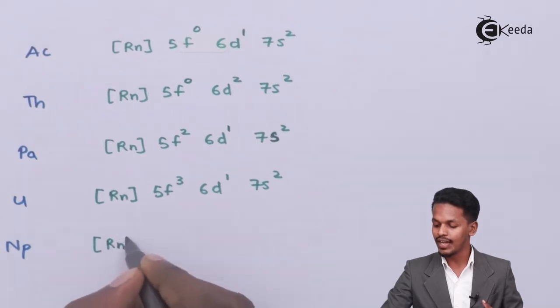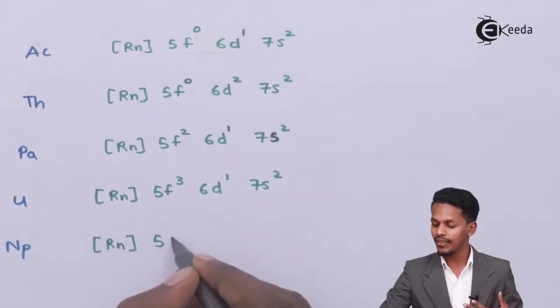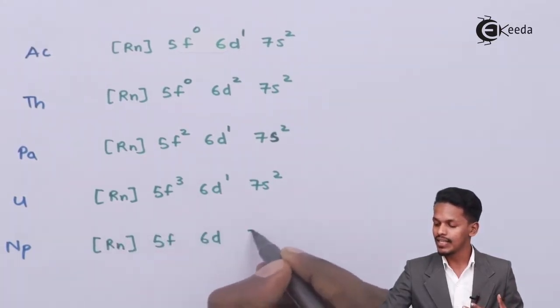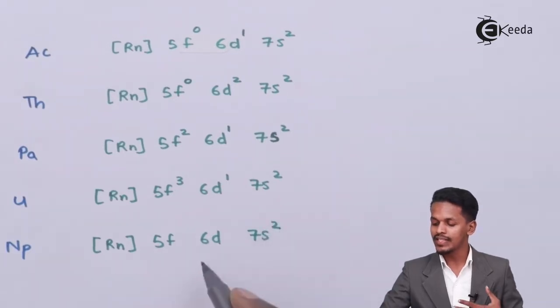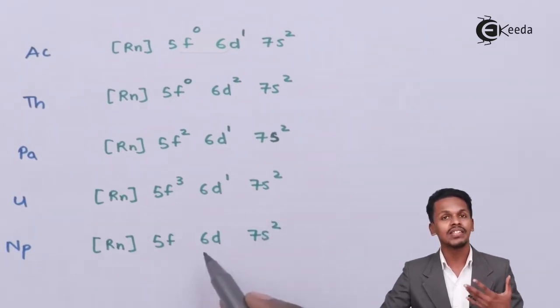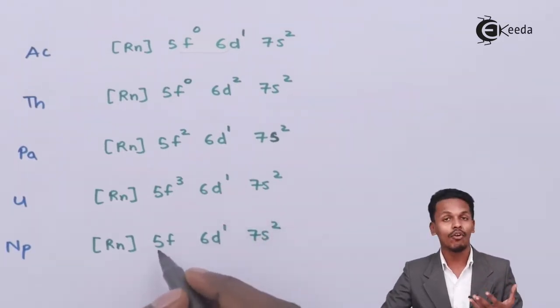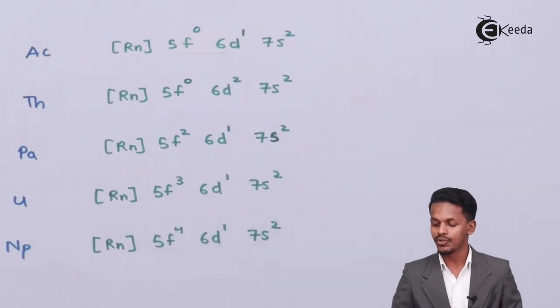For neptunium, the electronic configuration is [Rn] 5f⁴ 6d¹ 7s². The d orbital consists of one electron and the f orbital consists of four electrons.